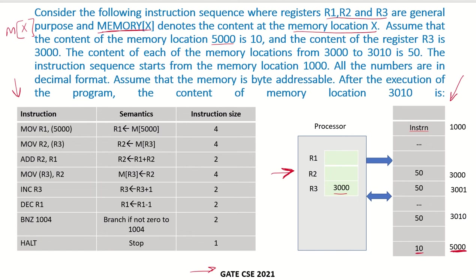The content of each memory location from 3000 to 3010 is 50. So in memory, locations 3000, 3001, 3002, and so on up to 3010 all contain 50. The instruction sequence starts from memory location 1000, so at address 1000 the first instruction is MOV R1, 5000, and so on.